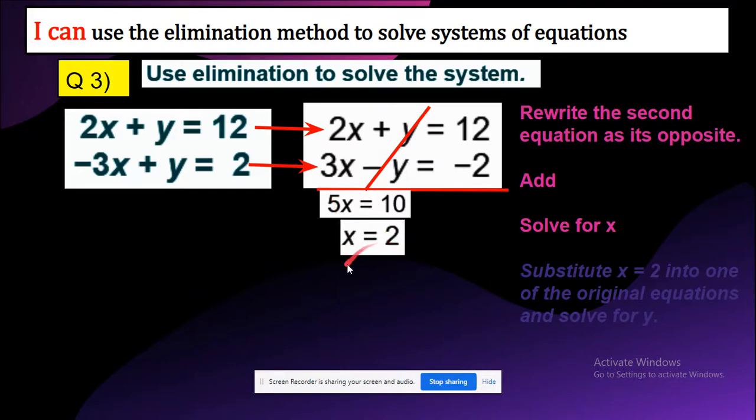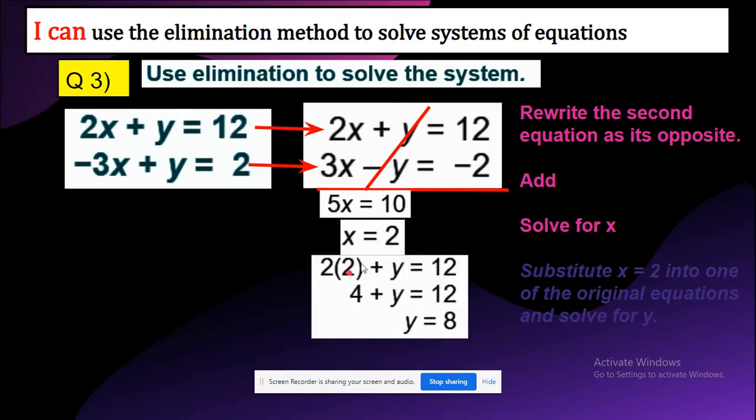So I'm going to plug in 2 where the x is. So 2 times 2 plus y equals 12. You're going to multiply 2 by 2, which is 4 plus y equals 12.